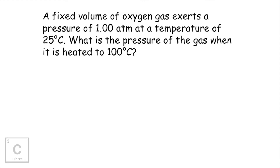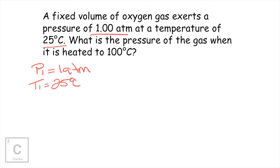Let's look at that in a math problem. A fixed volume of oxygen gas exerts a pressure of one atmosphere at a temperature of 25 degrees Celsius. What's the pressure of the gas when it is heated to 100 degrees Celsius? Let's identify all of our variables. One atmosphere is our pressure one. That's connected to a temperature of 25 degrees Celsius — that's our temperature one. As with our other gas laws, we've got to convert to Kelvin by adding 273, so 25 plus 273 gives us 298 Kelvins.